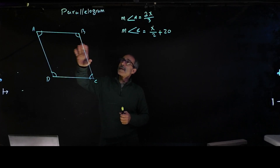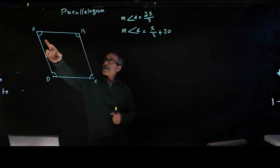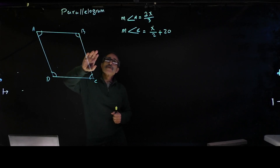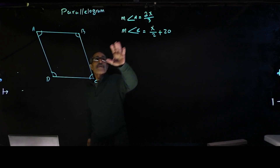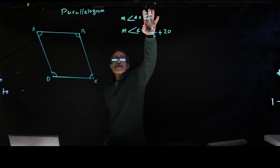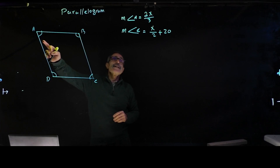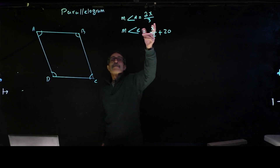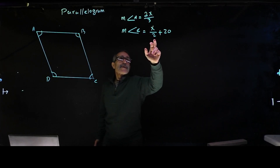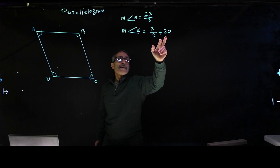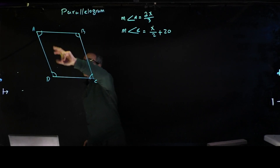So we have this parallelogram, and they give us angle A and C in terms of algebraic equations. Whatever this comes out, it's going to be in degrees. Angle A is 2x divided by 3, and angle C is x divided by 2 plus 20. They want to know what each angle comes out to.